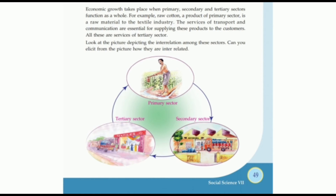These are the interrelations between the primary, secondary, and tertiary sectors. The sectors of the economy are mutually related to each other. Raw materials for the secondary sector are obtained from the primary sector. The tools and equipment for the primary sector are obtained from the secondary sector. The finished products are distributed to consumers with the help of the service sector. The service of laborers and vehicles are examples of the tertiary sector.